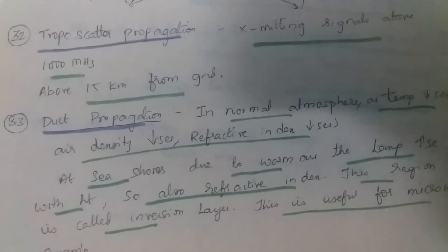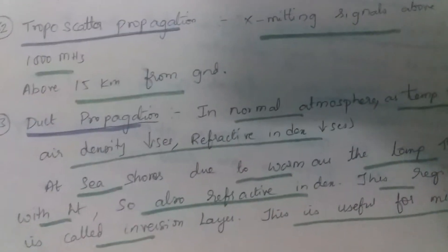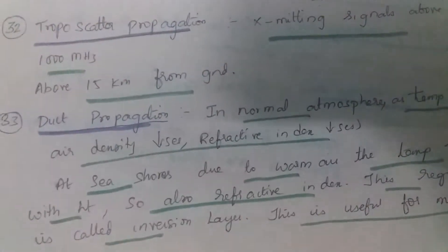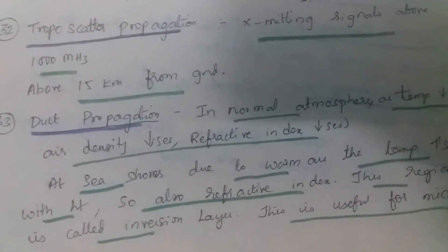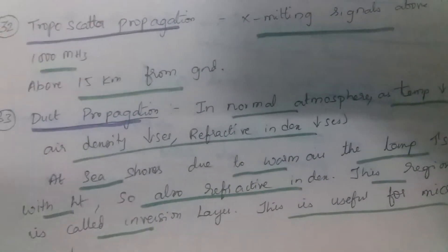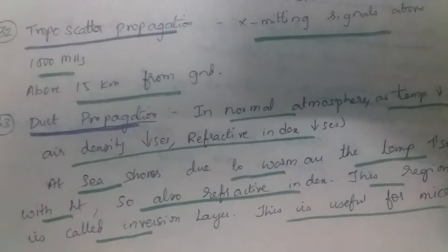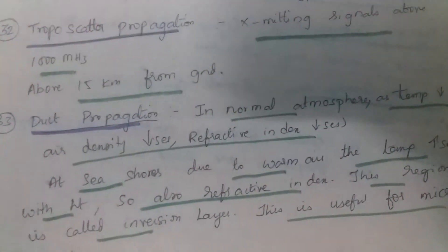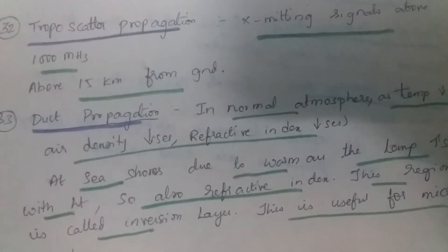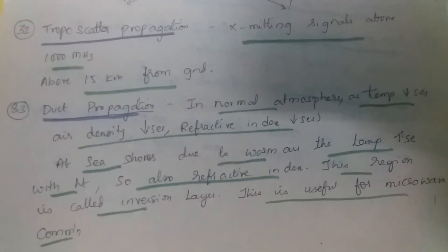In troposcatter propagation, you transmit signals which are above 1000 megahertz, and they are transmitted at a distance of about 15 kilometers from the ground. In normal atmosphere, as temperature increases, air density decreases and refractive index decreases. But near the sea shore, due to warm air, the temperature increases with height and the refractive index also increases. This region is called the inversion layer, and it is very useful for microwave communication.